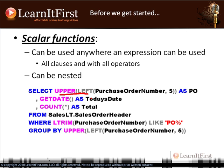Remember one of the rules we talked about in chapter one when we discussed the relational model - you can't have nested result sets. The scalar function is not a nested result set. It's one value per row that it returns.